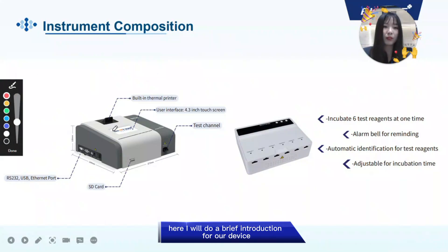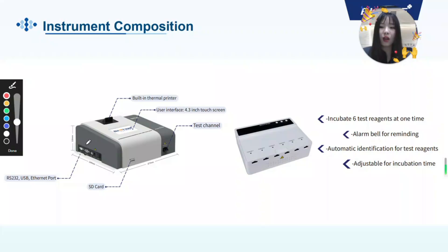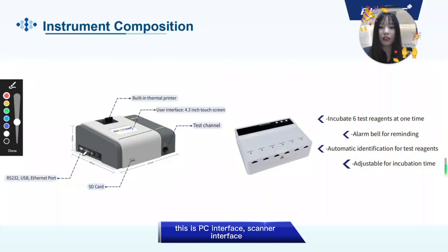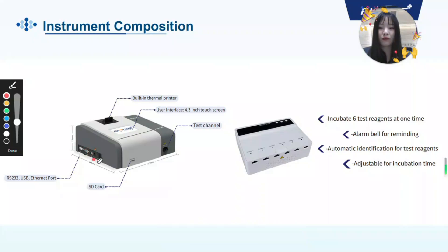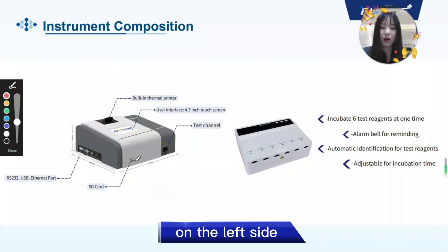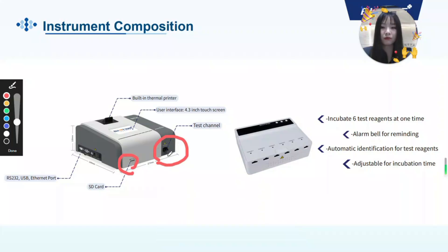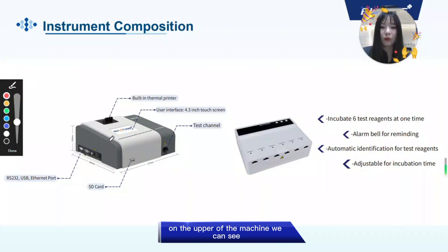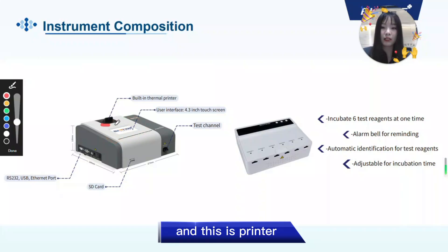Here I will do a brief introduction for our device. On the left side we can see the PC interface, scanner interface, and USB interface. This is a 12V adapter. The switch on and switch off button is here. At the front of the machine we can see there are two slots. The left slot is used for SD card, the right slot is used for the Tesla channel. On the upper part of the machine we can see the screen where you can choose Tesla mode and the menu. And this is the printer.